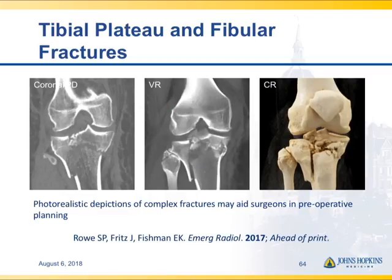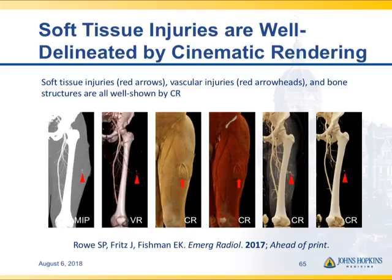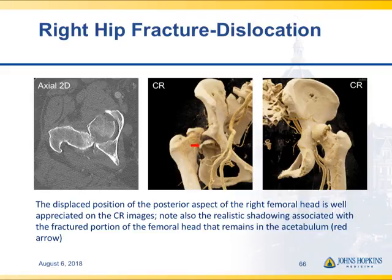With fractures, the details of the fracture fragment are better shown on cinematic rendering than on volume rendering. Cinematic rendering also allows us to look at soft tissue, the wound and defect, the site of active bleed, and normal vessels — be it the SFA, iliac vessel, or its branches. In this case of fracture dislocation, you see a little bit of the femoral head left in the acetabulum, the posterior dislocation of the majority of the femoral head, and that the vessels were not involved — a very nice visualization of the entire structure and all deformities.